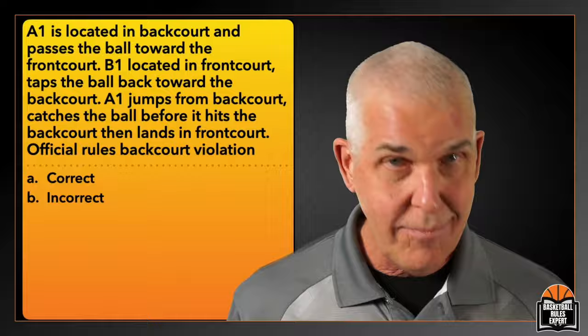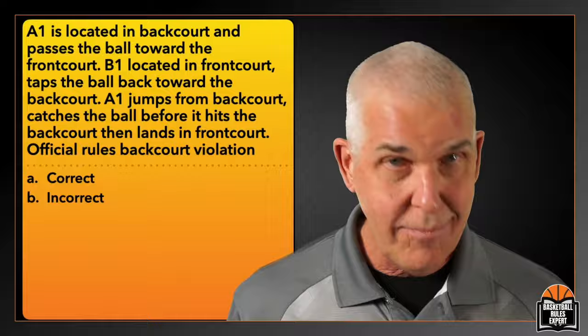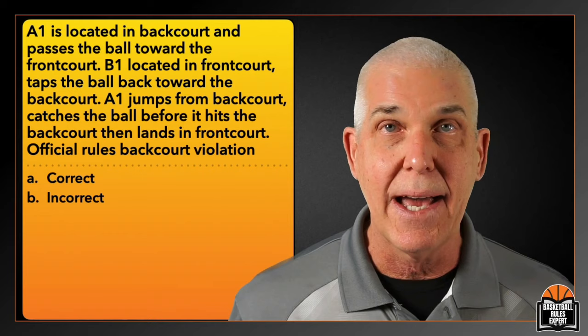That ping-pong ball action can throw us for a loop — this may be a processing play. But if we always remember our three elements for a backcourt violation: we must have team control on the court (we had that), and we must be the last to touch in the frontcourt and the first to touch in the backcourt. Who was last to touch in the frontcourt? The defense — B1 in the frontcourt tapped the ball back. So we cannot have a backcourt violation on this play.